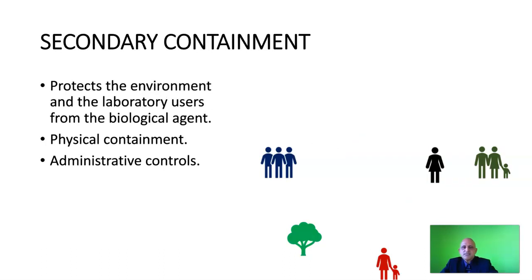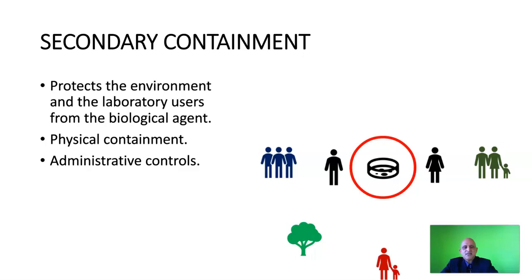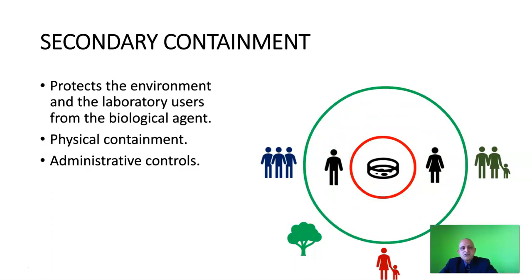Secondary containment protects the environment and the laboratory users from the biological agent. It can be in the form of physical containment or administrative controls. We have our biological agent in the laboratory, our laboratory users, and the first level of containment — shown in a red circle — protecting laboratory users from the biological agent. Secondary containment then protects the environment in the vicinity of the laboratory from this biological agent, and can be in the form of the facility design or other measures, which we will discuss in the lecture on facility design.